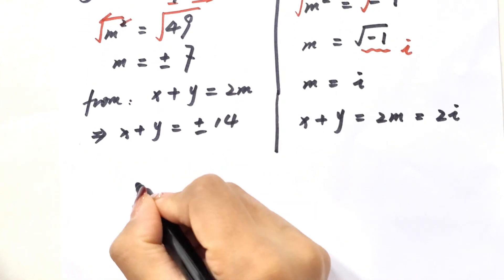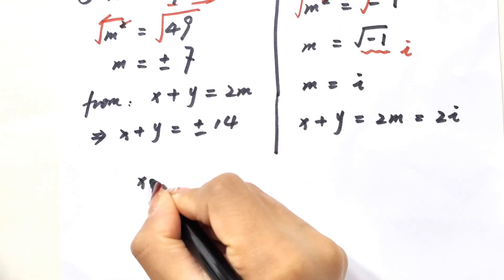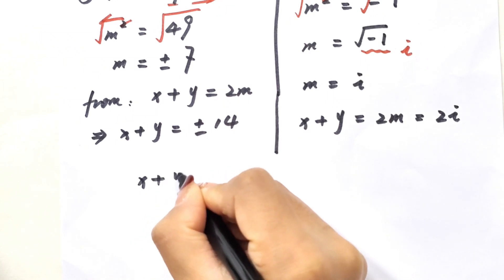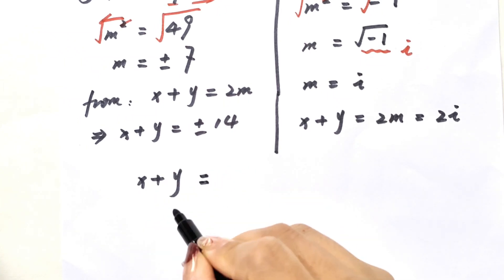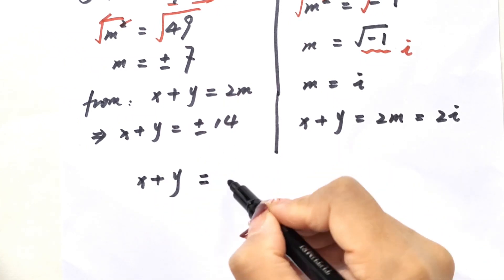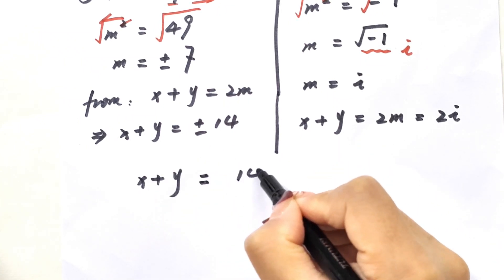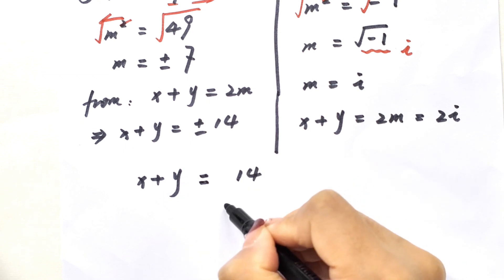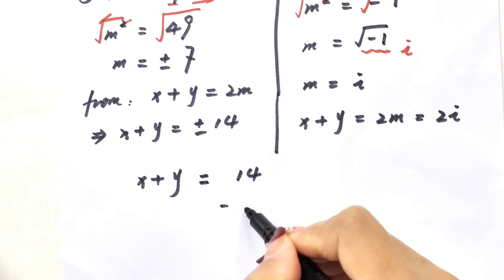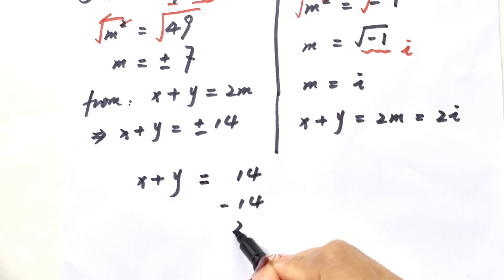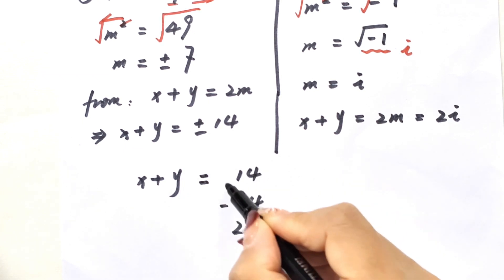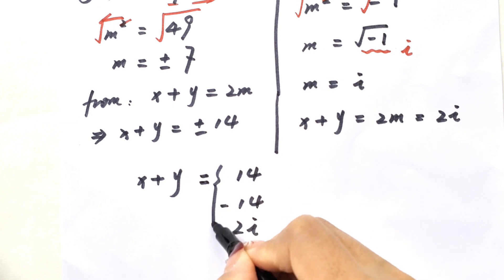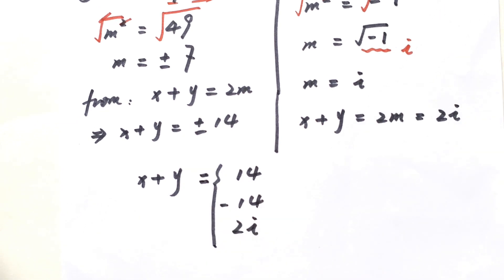Therefore, the value of x plus y has three answers: 14, negative 14, and 2i. Thank you for watching and see you in the next video. Bye-bye.